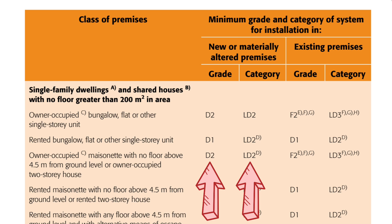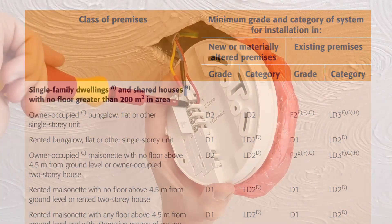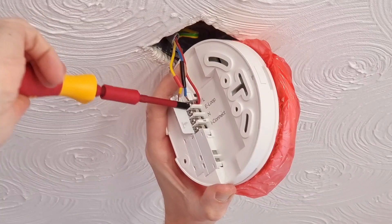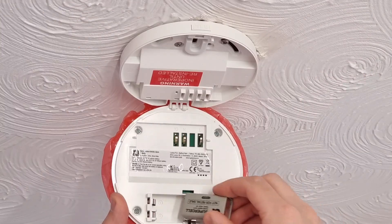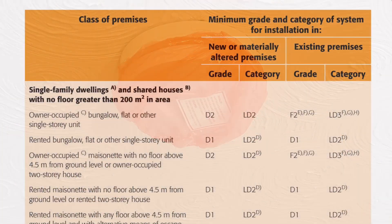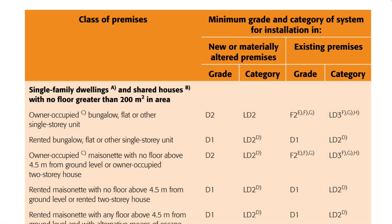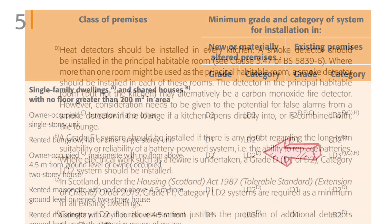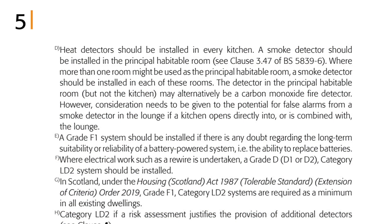We've explained what these grades and categories mean in detail in other videos in this series, so please go back and watch those if you can't remember exactly what they mean. But D2 basically means it's mains-powered with battery backup, with the batteries able to be replaced by the occupier. There's a reference next to the category LD2 that sends us to note D, which contains some information on types and locations of detection, but we're going to cover that in the next video in this series.